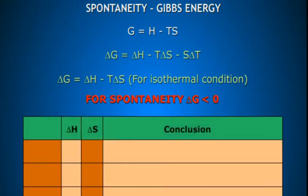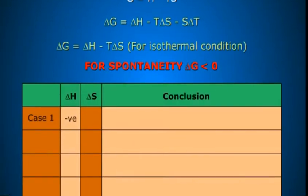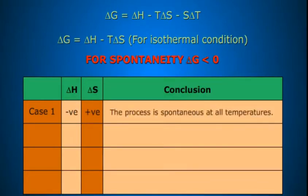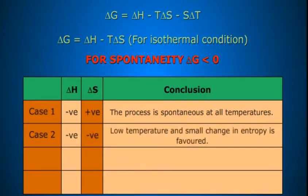The conclusions we draw are as follows. Case 1: ΔH is negative and ΔS is positive — the process is spontaneous at all temperatures. Case 2: ΔH is negative and ΔS is also negative — in this case, low temperature and small change in entropy is favoured for spontaneity.